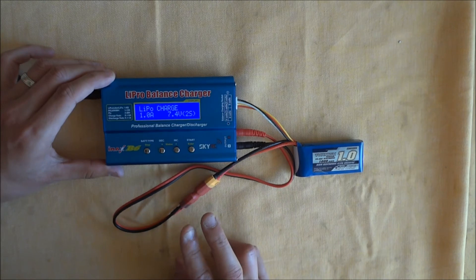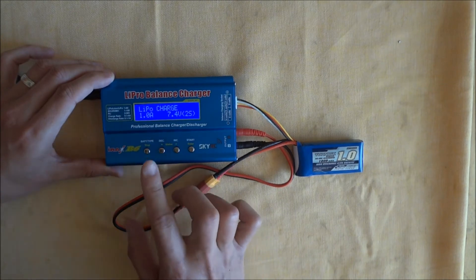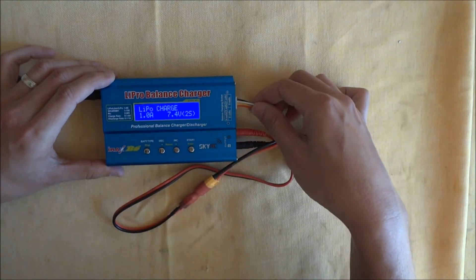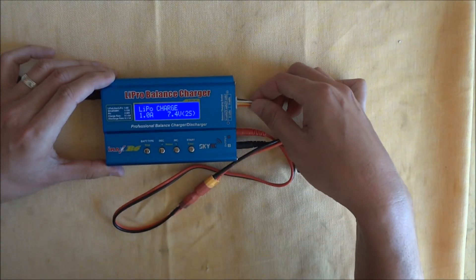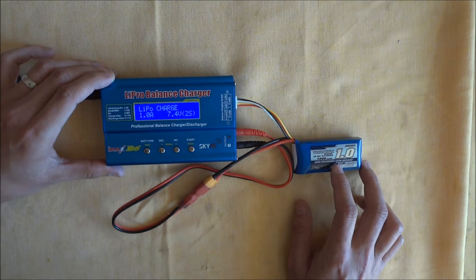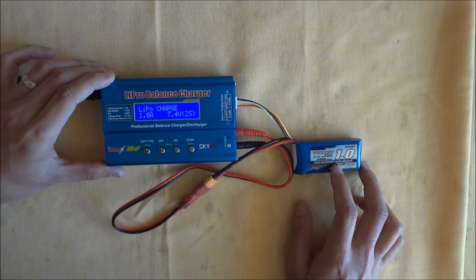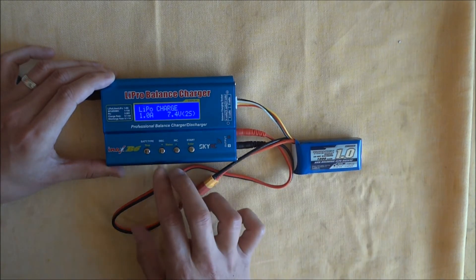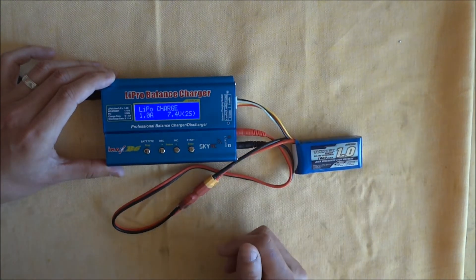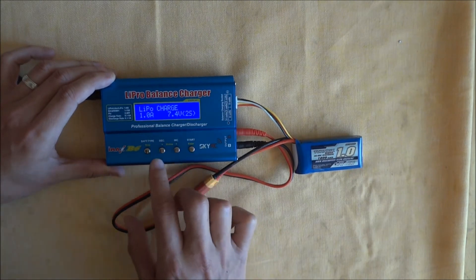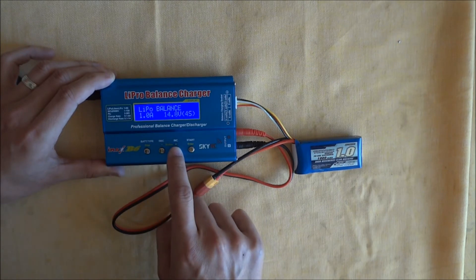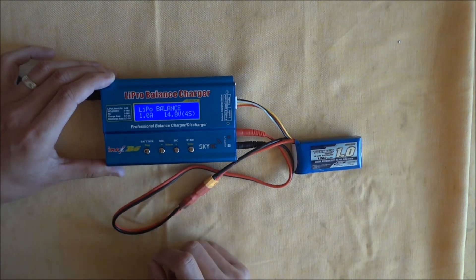So we want to do a LiPo charge, but we want to do a balance charge. You can do a normal charge, but I always do a balance charge and that's with the balance lead connected. It makes sure that each cell like a 3S, for example, each of the three cells are charged at equal level. So you're not going to have one low or one high. So to navigate left and right, we want to go right and look for LiPo balance. So that's it here.